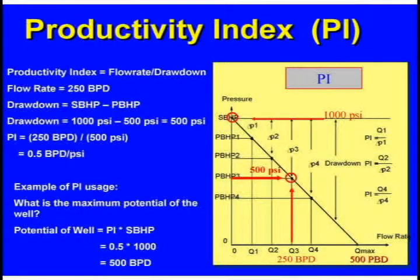An example: here's a reservoir pressure of 1,000 pounds. They started producing the well at 250 barrels a day and the pressure dropped down to 500 PSI. Productivity equals flow rate over drawdown. The flow rate is 250 and we dropped the pressure from 1,000 to 500, so our pressure drop is 500 PSI. Our PI is 250 divided by 500, or 0.5 barrels per day per PSI.